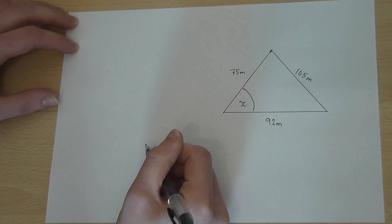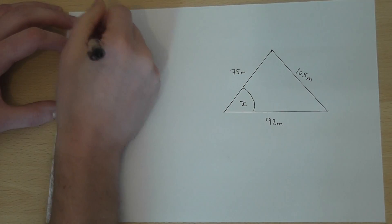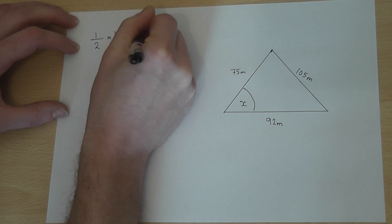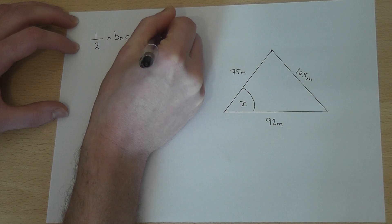then the area is given by a half BC sine of X,